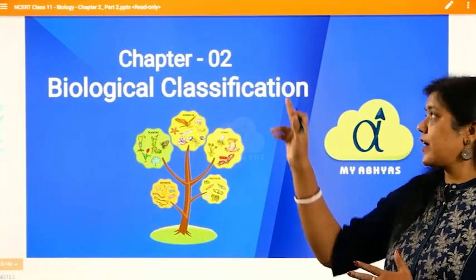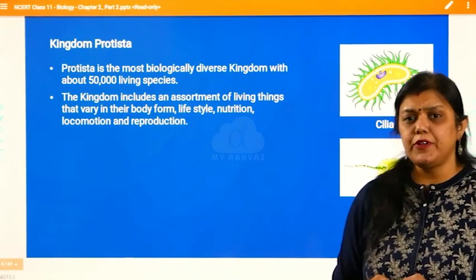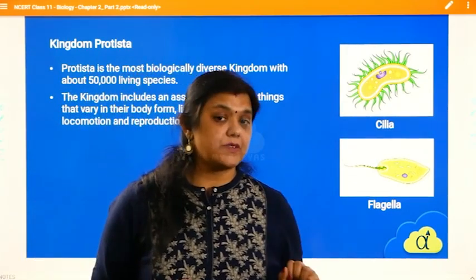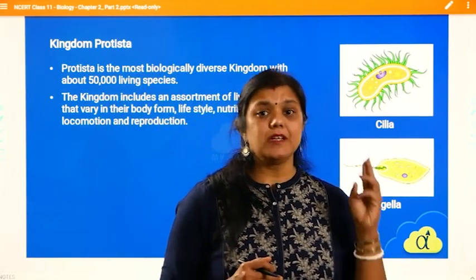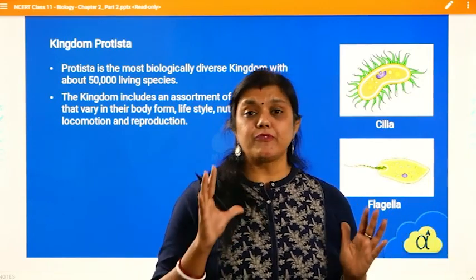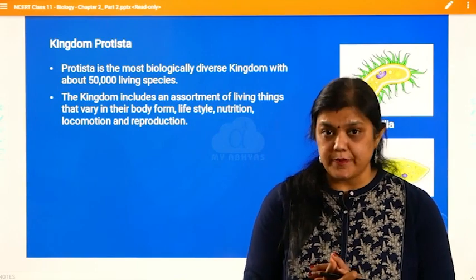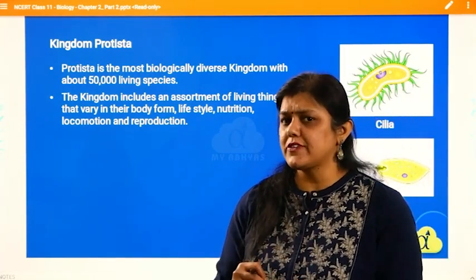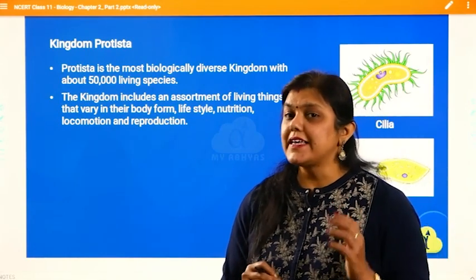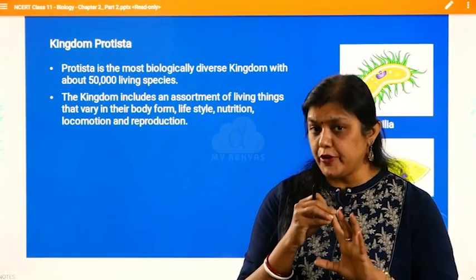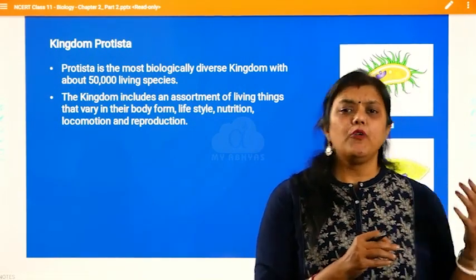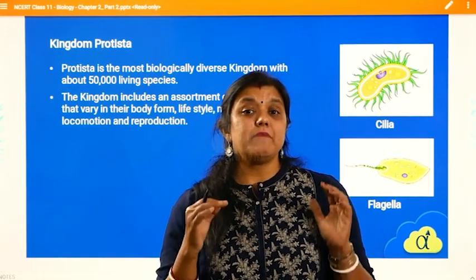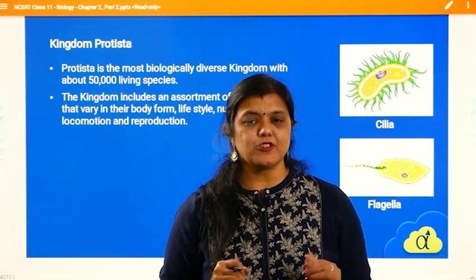We are talking about chapter number two, biological classification. In the previous session we started with kingdom Monera and I also told you about how this five kingdom classification has been done. It started with two kingdom classification, then three, four, and finally five kingdom classification, which was given by R. H. Whittaker. He checked all the characteristics depending on cell size, phylogenetic and evolutionary characteristics, and found that kingdoms can be classified into five: Monera, Protista, Fungi, Plantae, and Animalia.